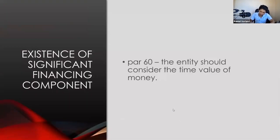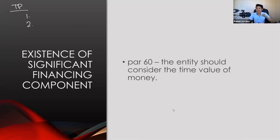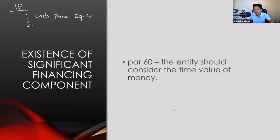If payment is more than one year away, the transaction price is determined in order of priority. First priority is the cash price equivalent — the amount a buyer would pay if paying in cash. This is different from the installment price. For example, a car's cash price equivalent might be 1.2 million pesos, but if purchased on installment paid over five years, the total payments might be 1.6 million pesos.